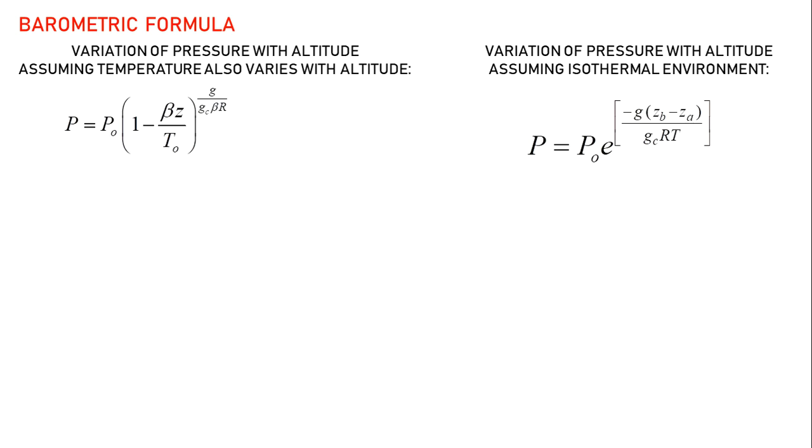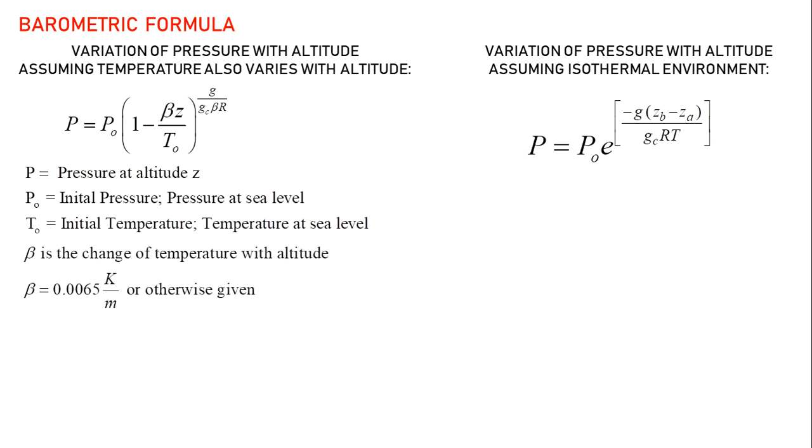These are the equations, where P is pressure at altitude z, P0 is initial pressure or pressure at sea level, T0 is initial temperature. Beta is the change of temperature with altitude expressed as Kelvin per meter unless given.